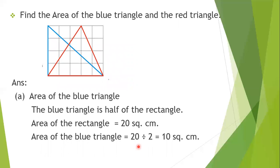Now the next question: find the area of the blue triangle and the red triangle. There is a large rectangle given — it has a breadth of four centimeters and a length of five centimeters. Inside this large rectangle, two triangles are shown: one is the blue triangle, and the other is a red triangle. We have to find the area of both.